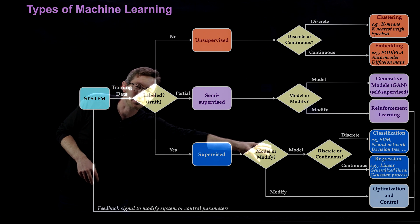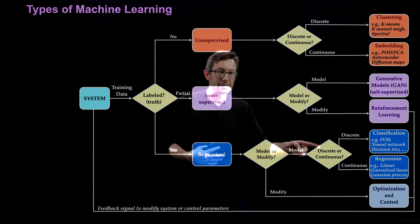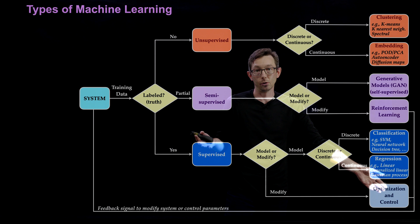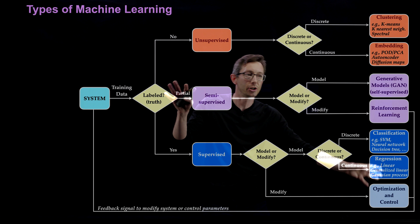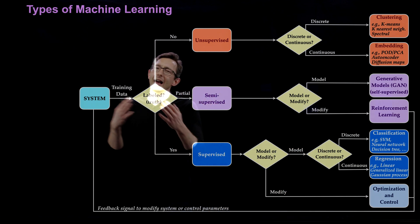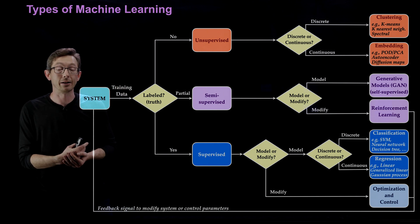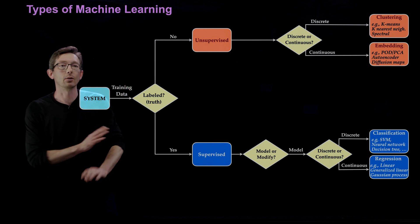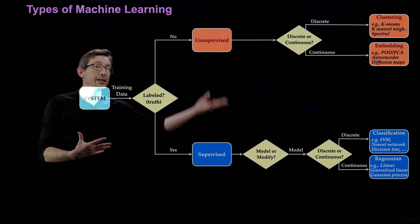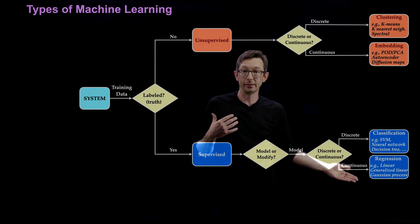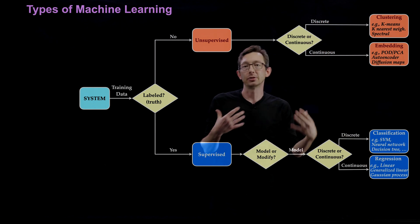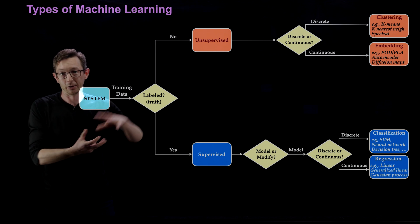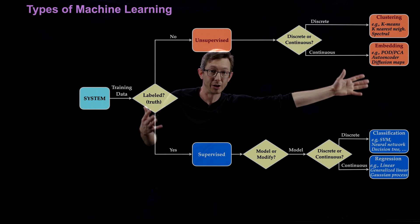The model-versus-modify dichotomy also applies in supervised learning: classical machine learning models a system, but the same algorithms can be used for optimization and control to modify it. Reinforcement learning is a partially measured version of classical nonlinear optimization and control algorithms. This is not a hard dichotomy — lines are blurred depending on the algorithm. The key takeaway is the canonical picture: supervised vs. unsupervised, and discrete vs. continuous labels or data, giving four major task types — classification, regression, clustering, and embedding — with generative models and reinforcement learning in the middle.